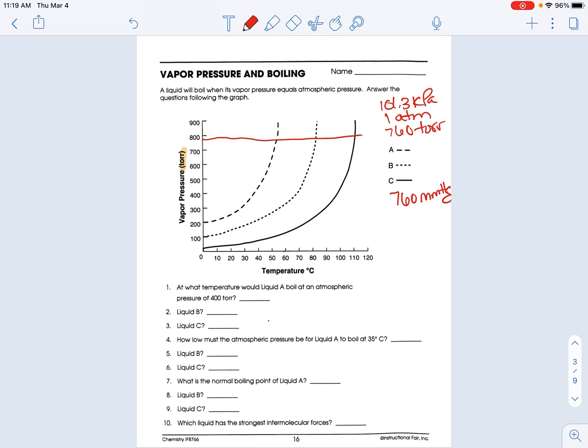At what temperature would liquid A boil at an atmospheric pressure of 400 torr? And then it asks for B and C. So as straight as I can across. So there's 400 torr. So coming down, I don't know, like 30, that's not straight, maybe 36 degrees Celsius.